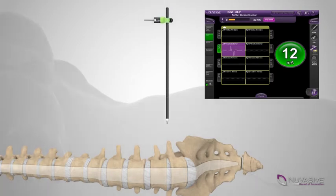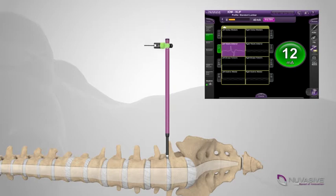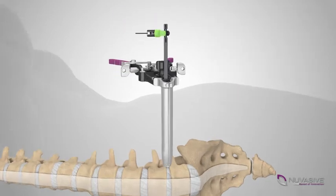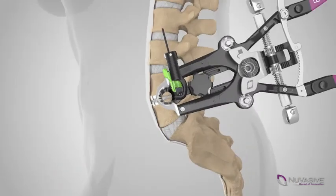Dilators will be used to direct the path to the affected disc space, while advanced monitoring will help the surgeon avoid local nerves. Once the safest path has been determined, a retractor will be utilized to hold the skin incision open, providing access and visibility to the affected area.